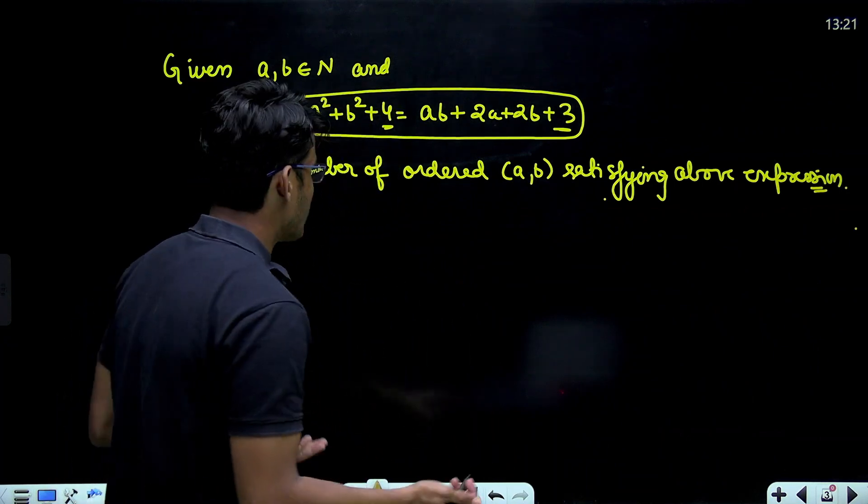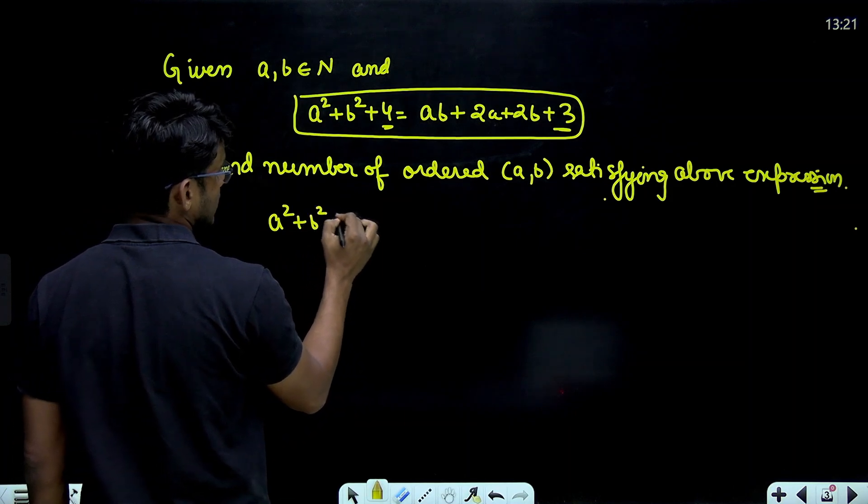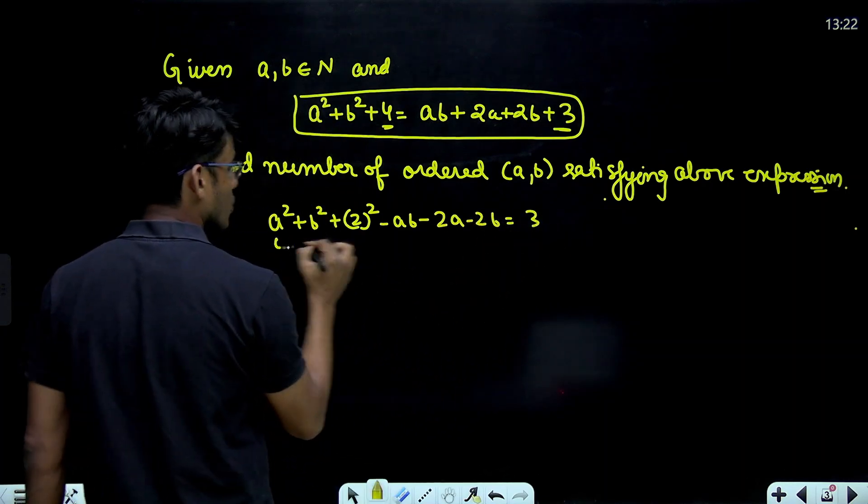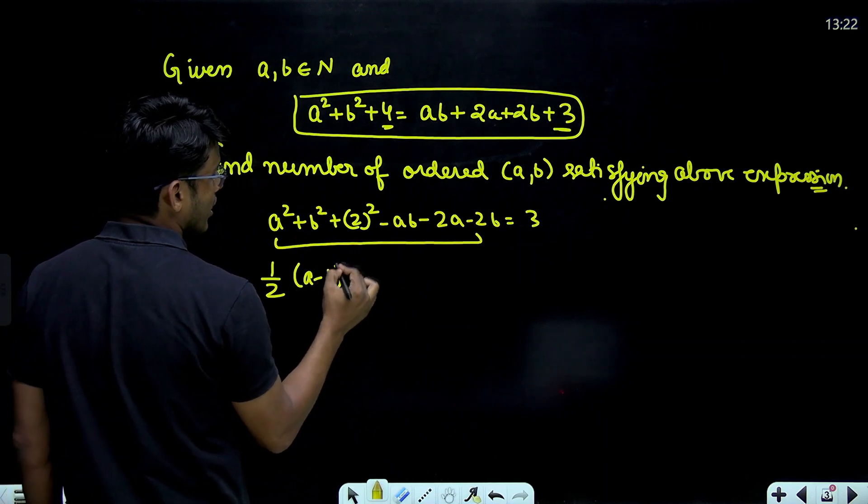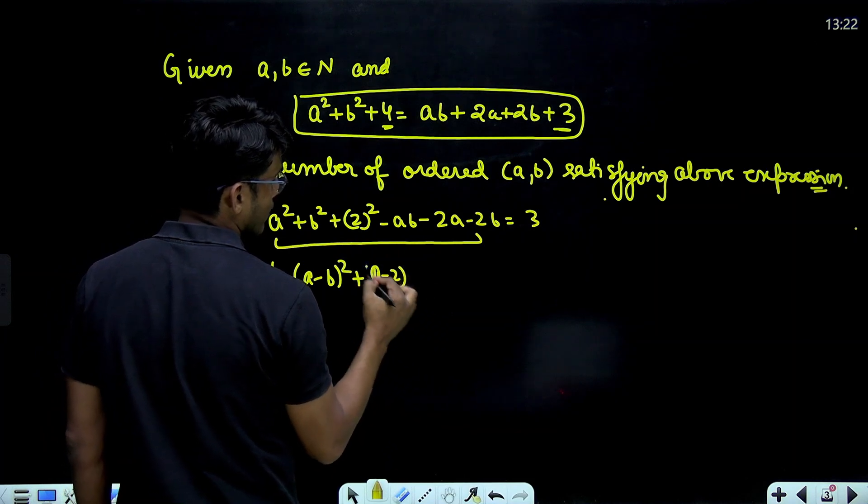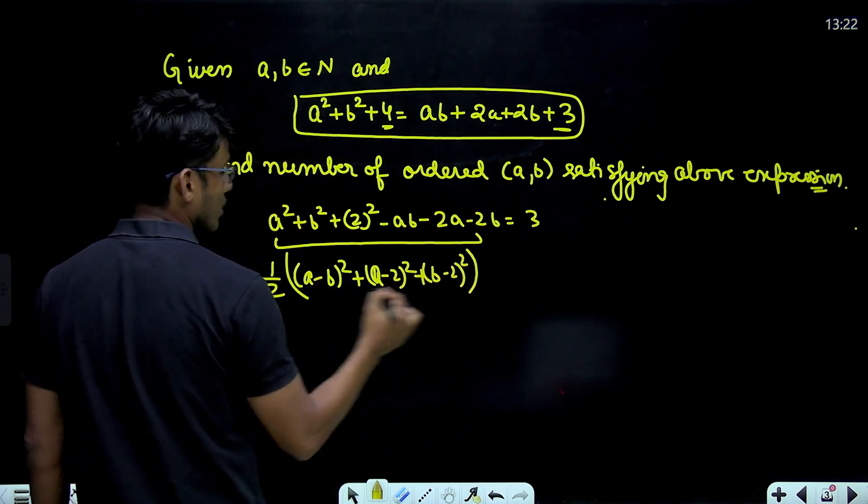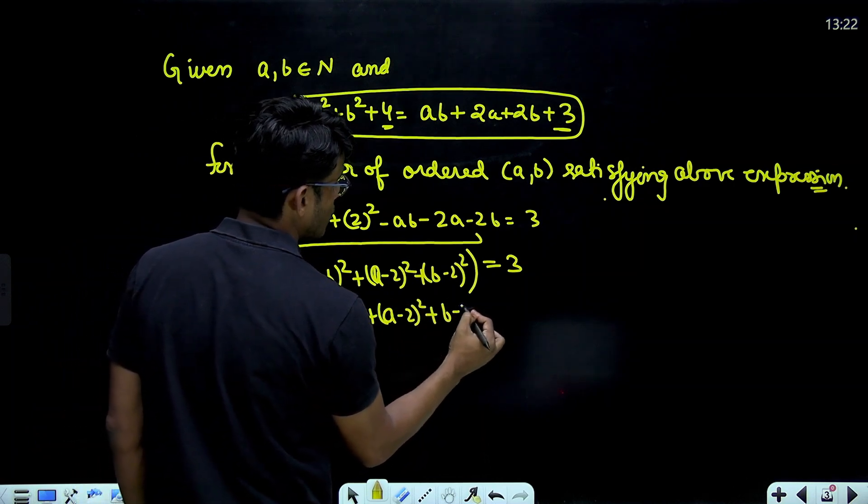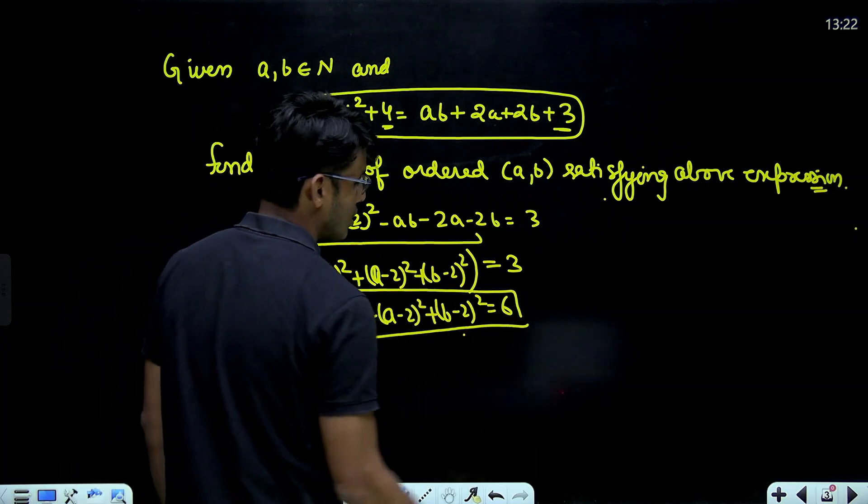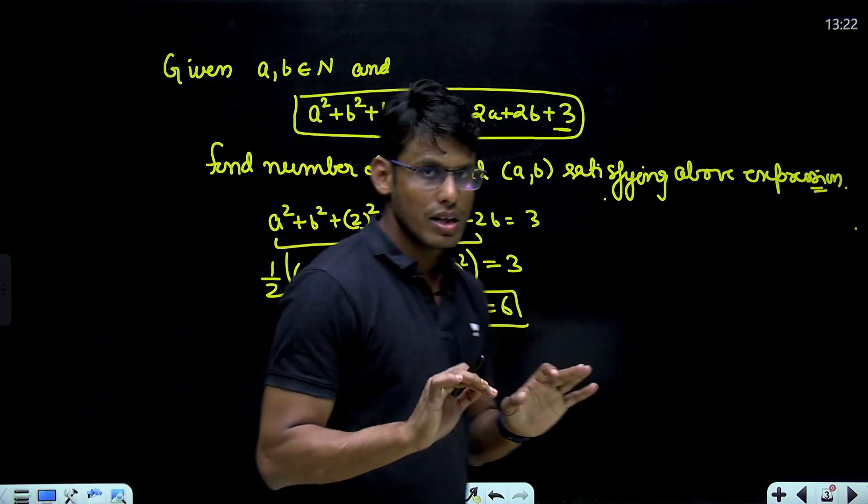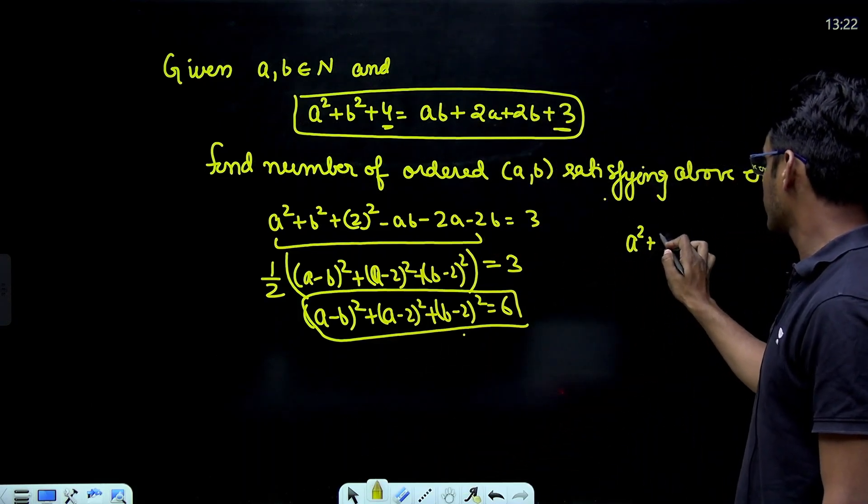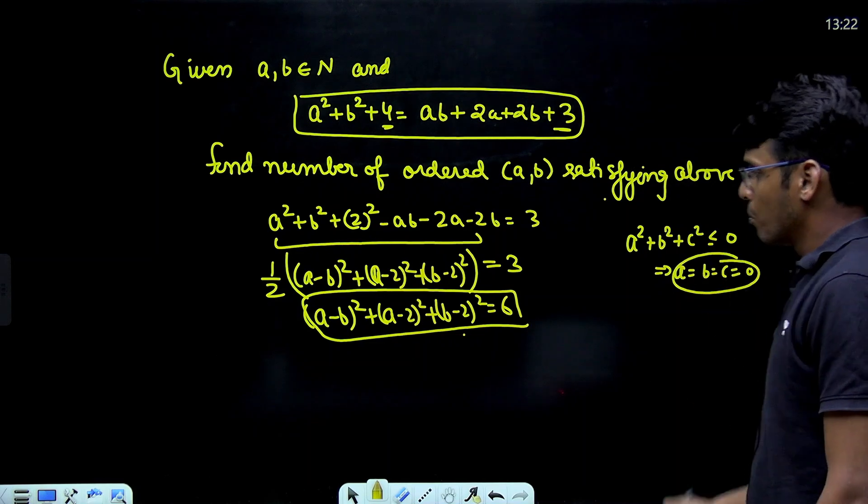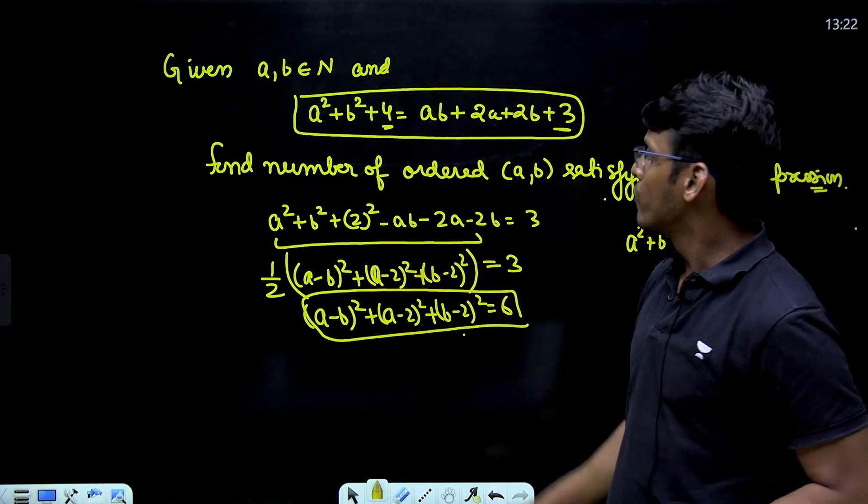So see, now the identity here is very simple. If you write it like this, A^2 plus B^2 plus 2^2 minus AB minus 2A minus 2B equal to 3. So, you know that this becomes half of A minus B square plus A minus 2 square plus B minus 2 square equals 3. So, A minus B square plus A minus 2 square plus B minus 2 square equals 6. This is what you have got. Now, just imagine if it would have been like this, then very easy solution was A equals B equals C equals 0.